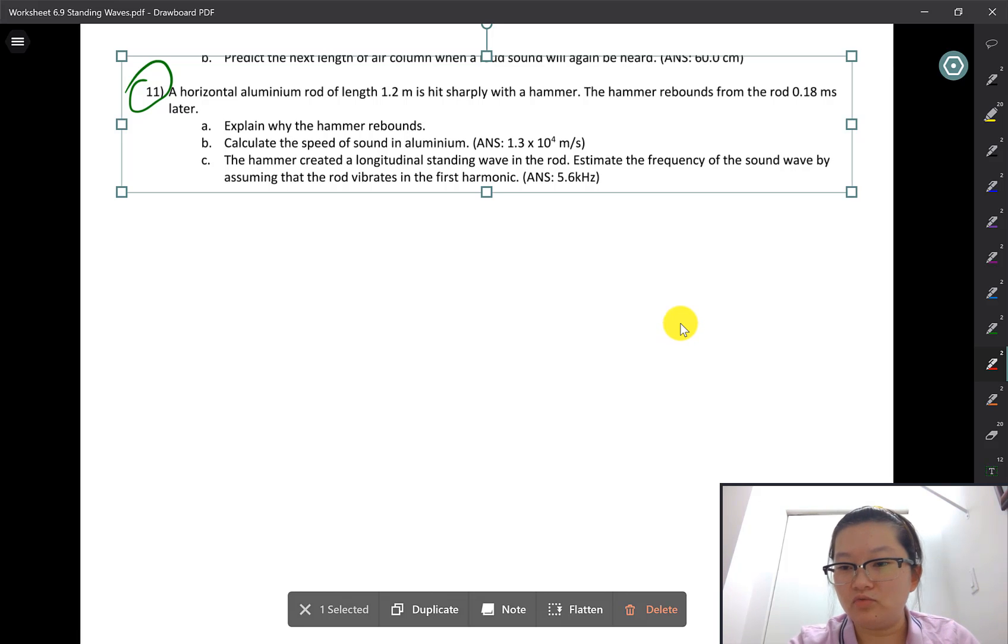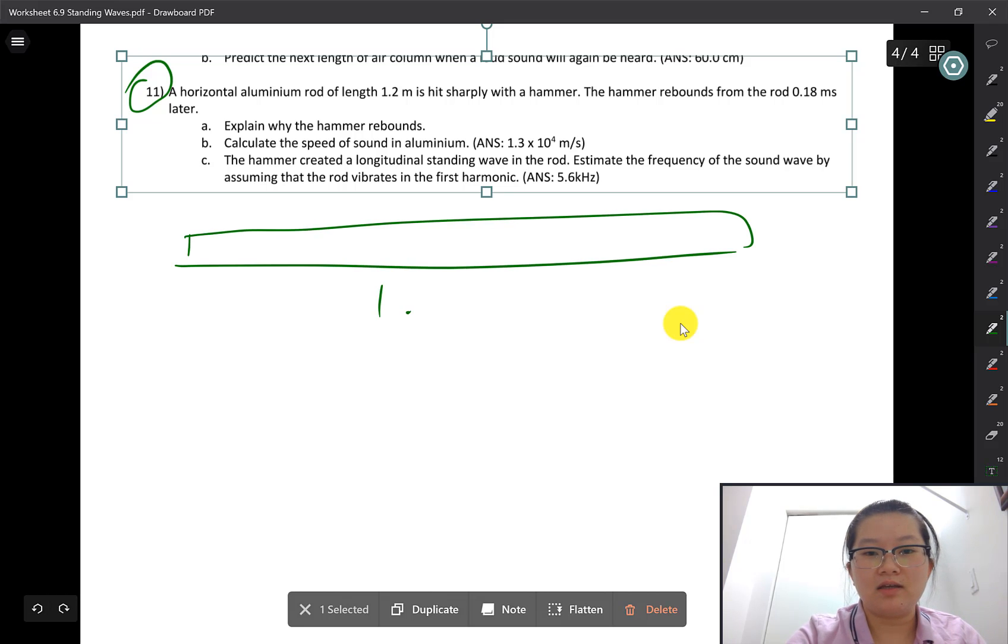A horizontal aluminum rod of length 1.2 meters is hit sharply with a hammer. The hammer rebounds from the rod 0.18 milliseconds later. Interesting. Explain why the hammer rebounds.